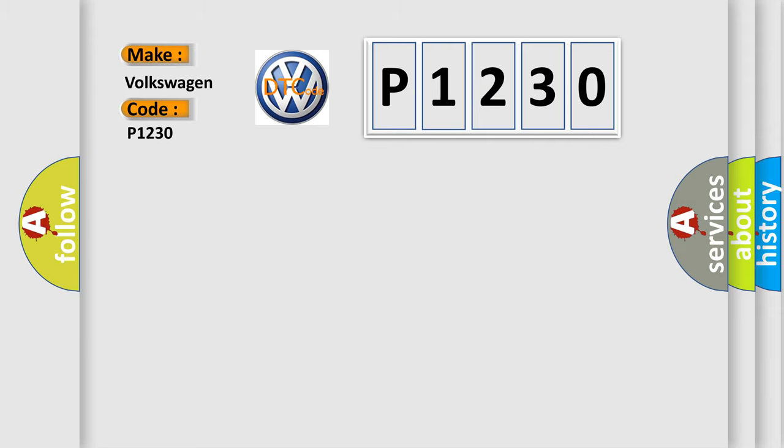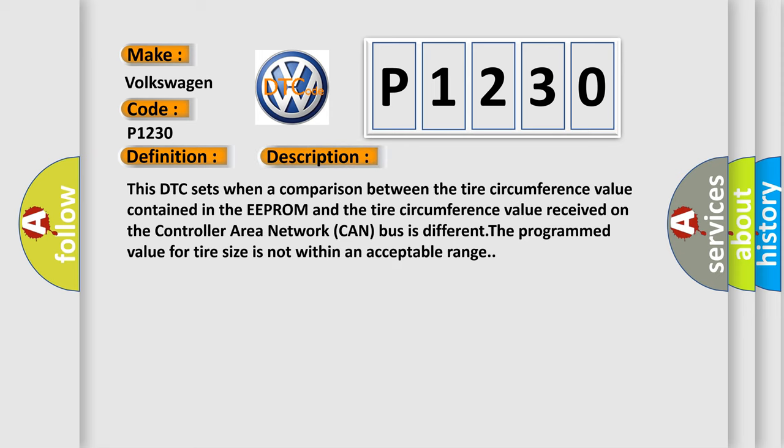The basic definition is Tire revolutions range performance. This DTC sets when a comparison between the tire circumference value contained in the EEPROM and the tire circumference value received on the controller area network CAN bus is different. The programmed value for tire size is not within an acceptable range.